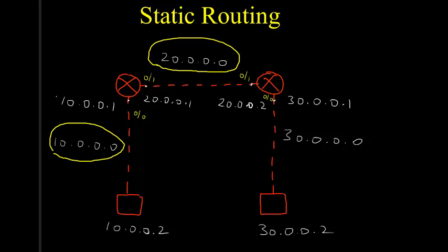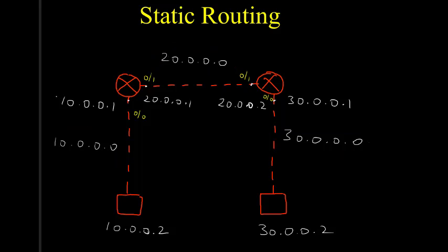Now we understand the network — three networks — and we have to configure static routing on this. We will use Cisco Packet Tracer.